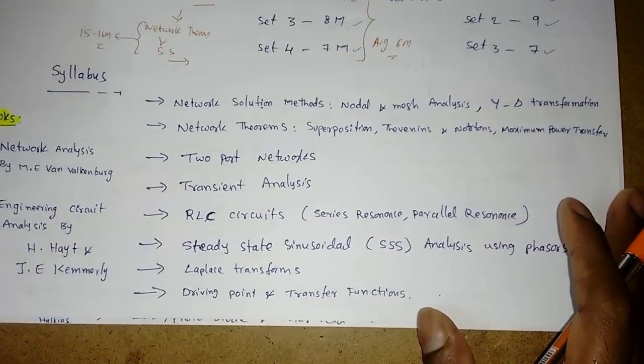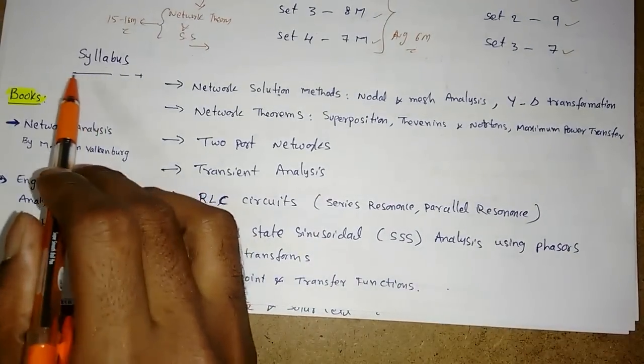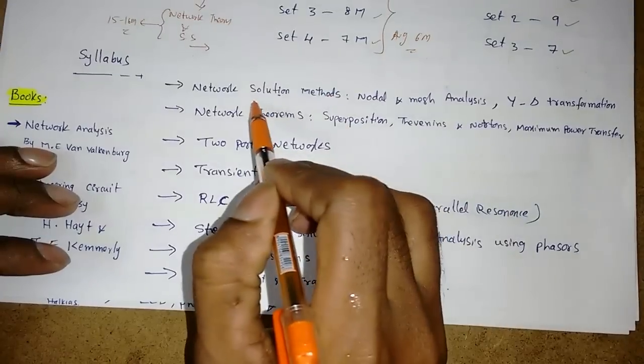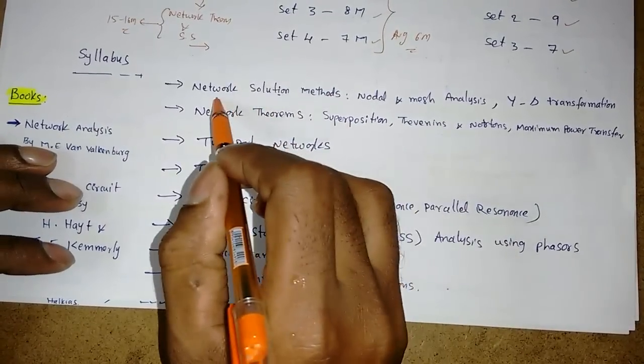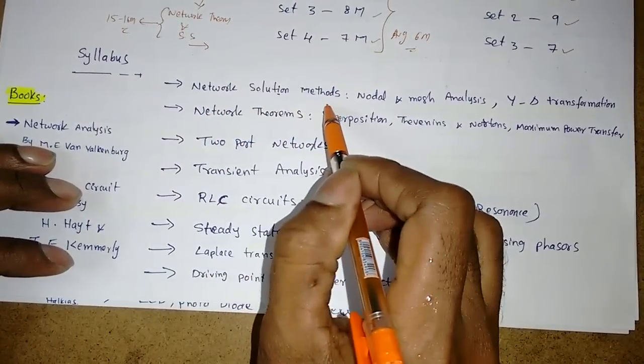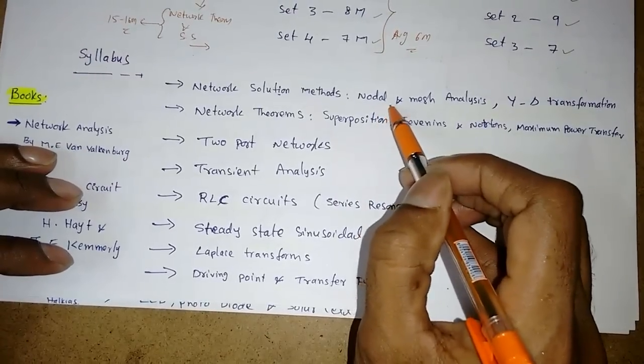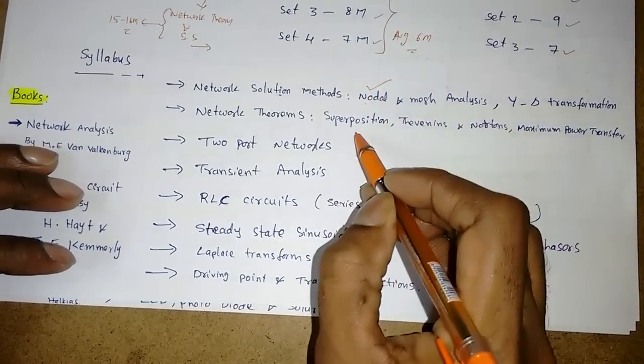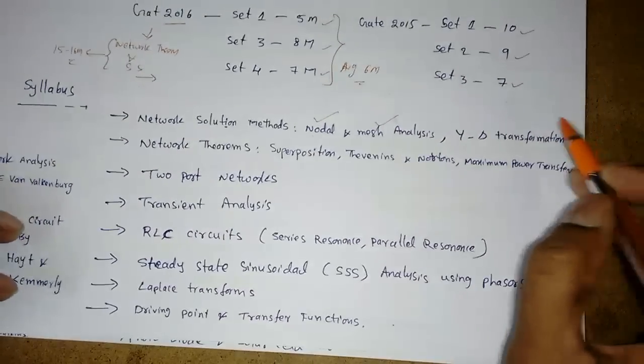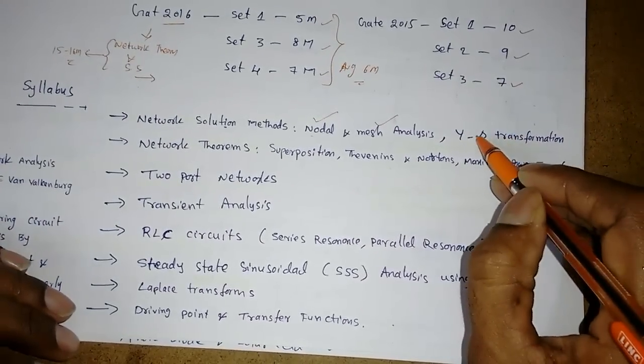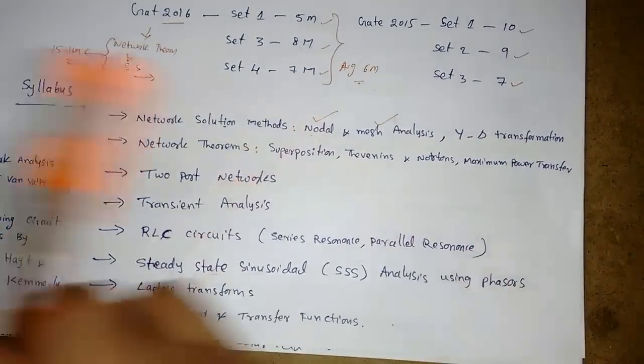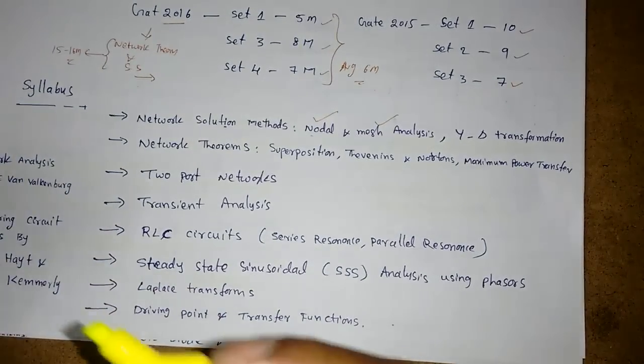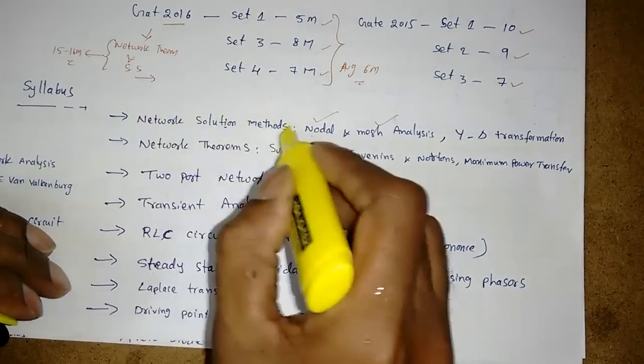Now, how to prepare? If you see the syllabus, it includes first the introduction, we can say network solution method. That is how to find different currents or voltages using nodal analysis, mesh analysis, and transformations like star to delta and delta to star conversions. Everyone should start with the basics only.